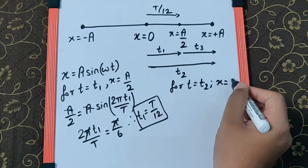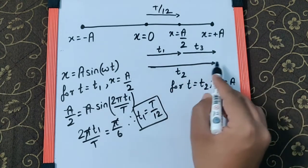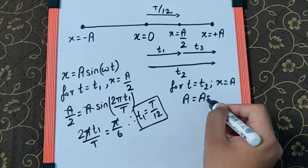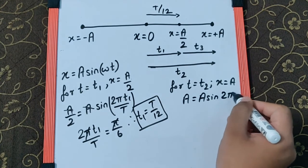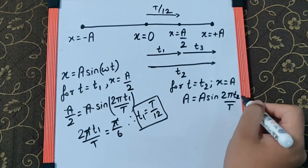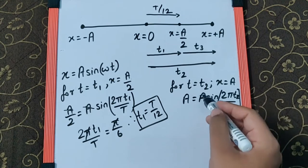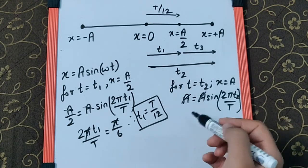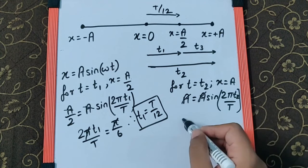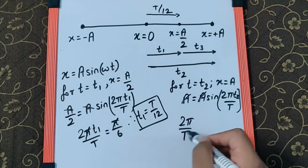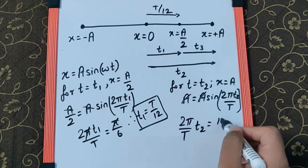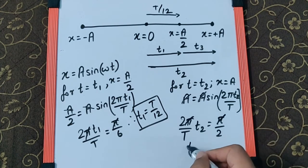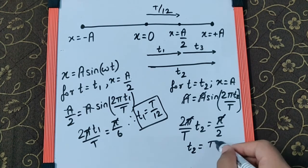For time t₂, x = a, so the equation becomes a = a sin(2πt₂/T). The 'a' cancels, and sin θ = 1 when θ = π/2. So 2π/T × t₂ = π/2, which gives t₂ = T/4. The time to travel from the mean position to the positive extreme is T/4.